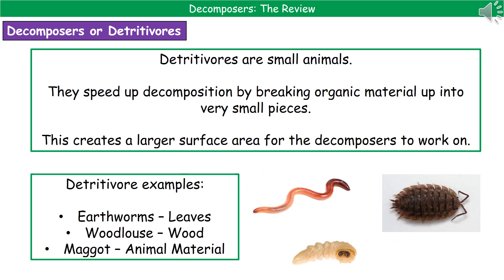The second important type of organism is a detritivore. Be careful not to mix up decomposers and detritivores. Detritivores are small animals whose purpose is to speed up decomposition by breaking organic material into very small pieces. This creates a much larger surface area that the decomposers — the bacteria and fungi — can then work on, resulting in a faster rate of decay.